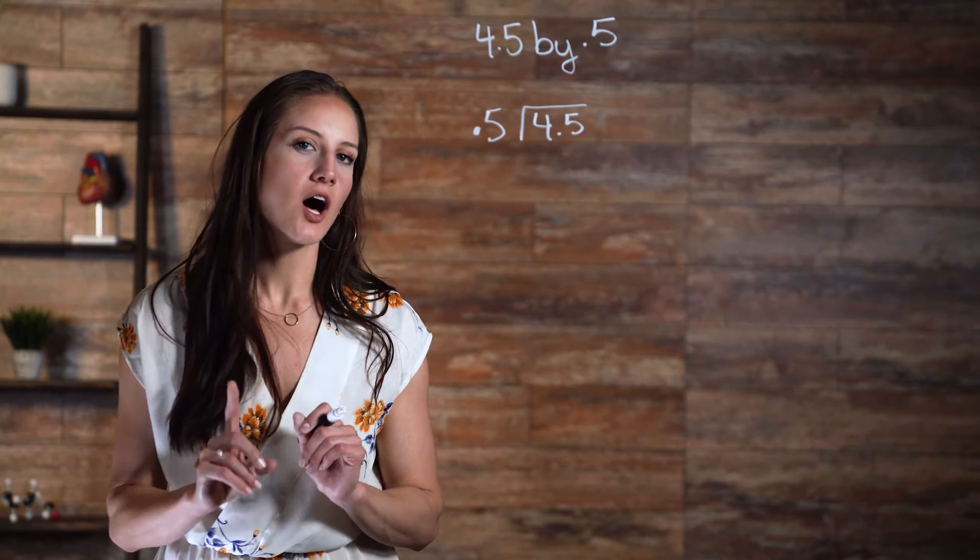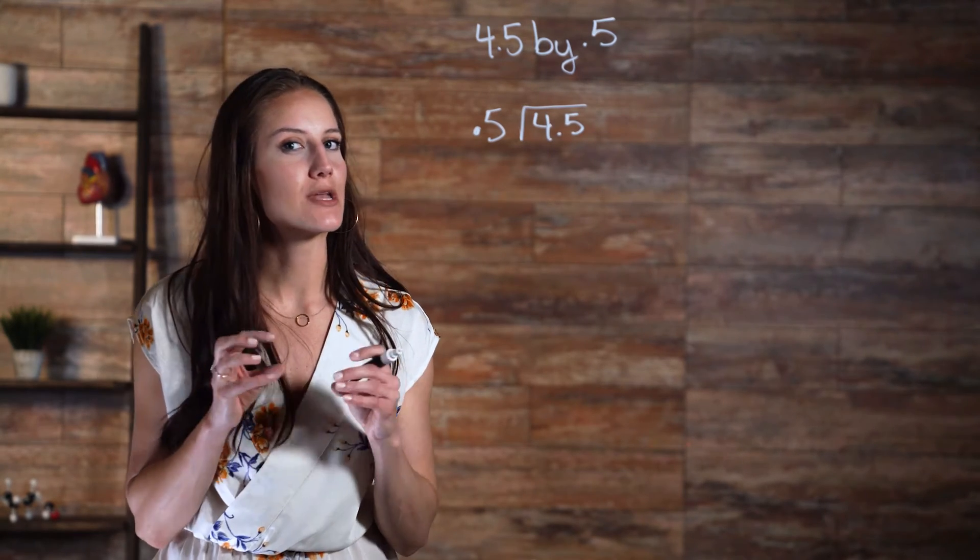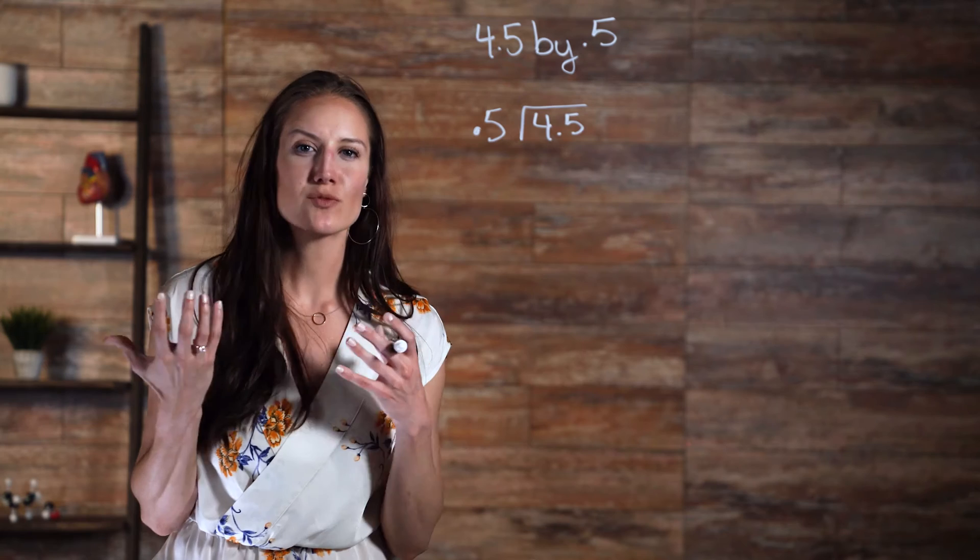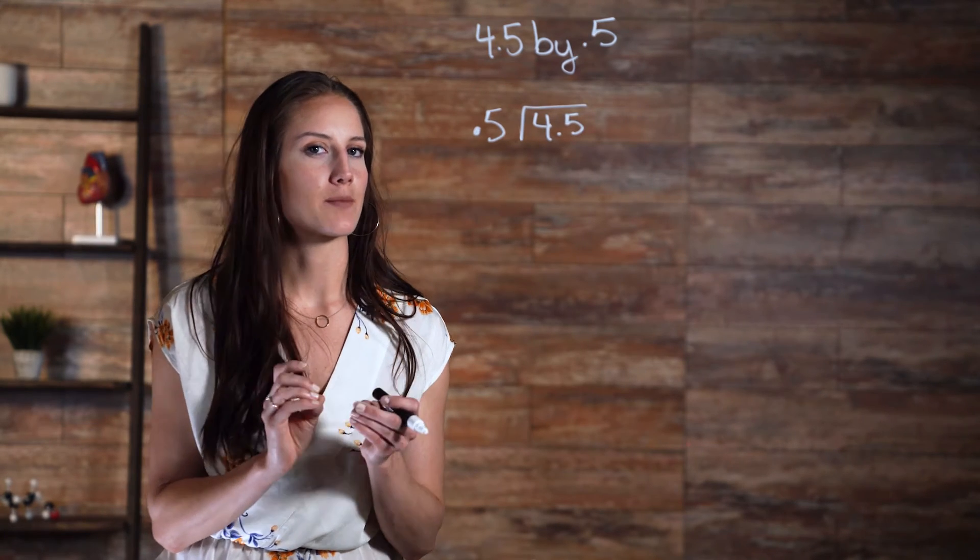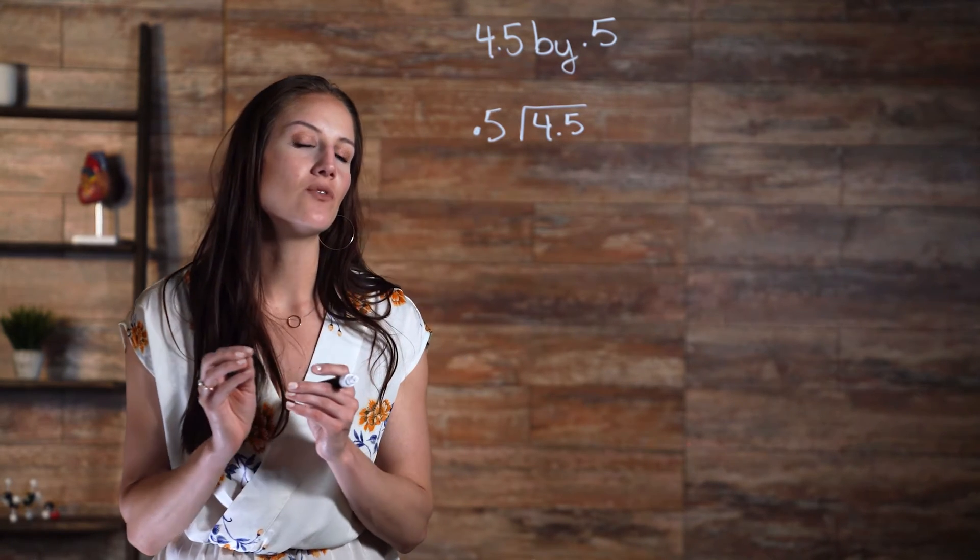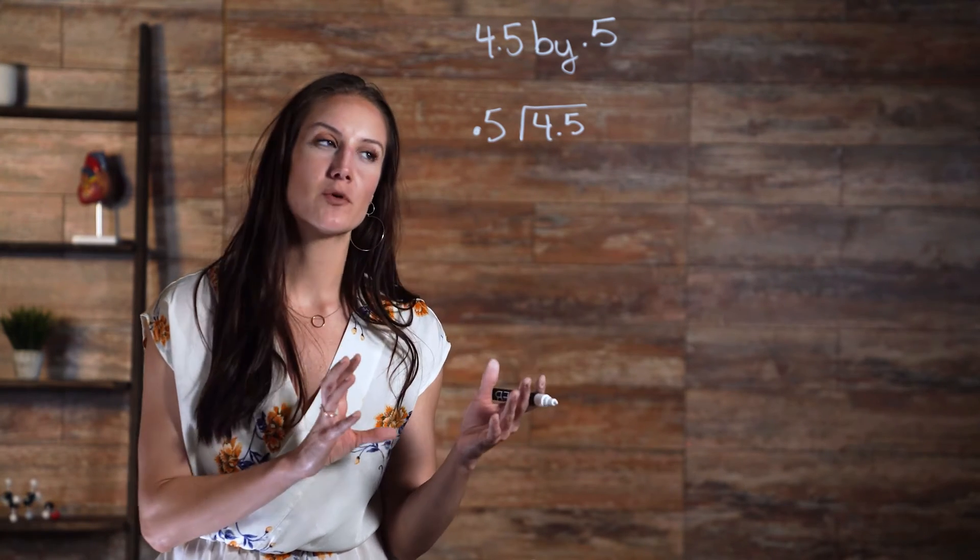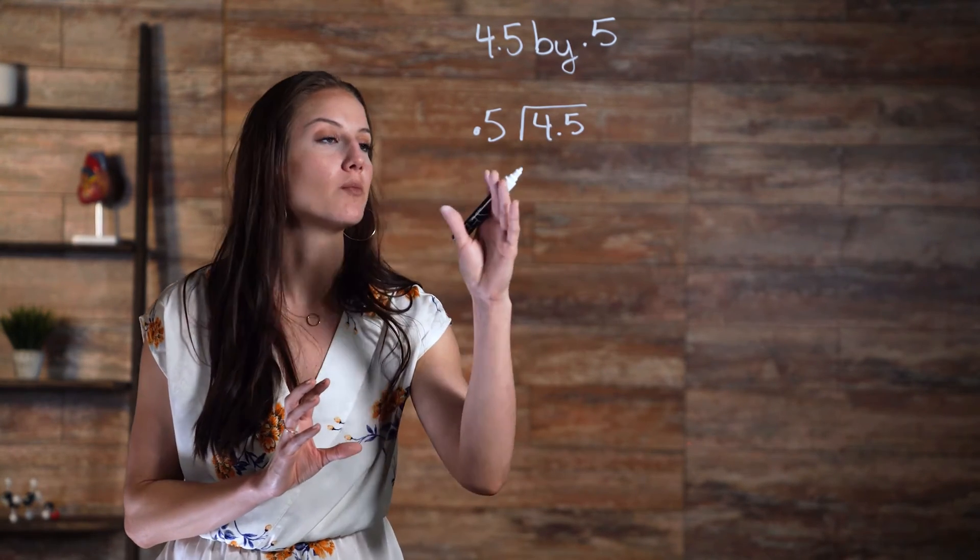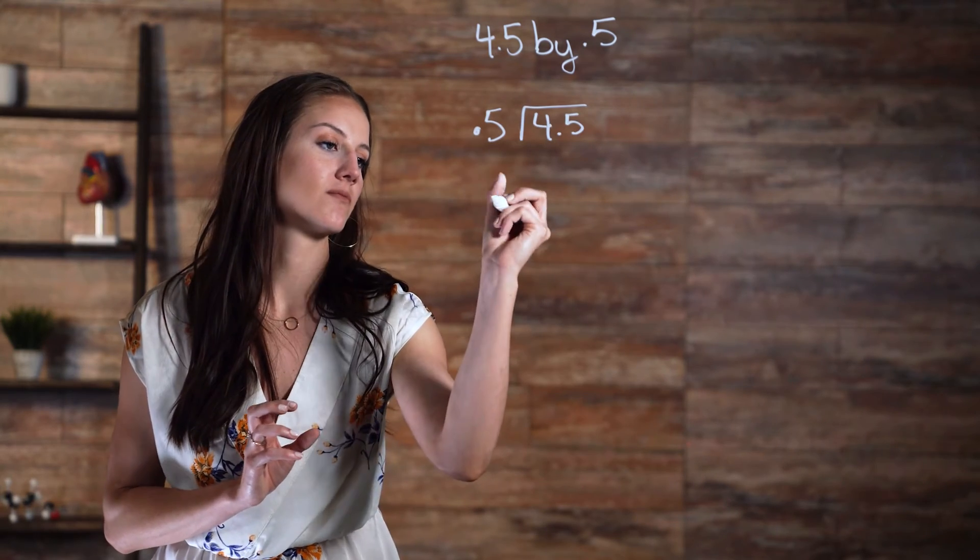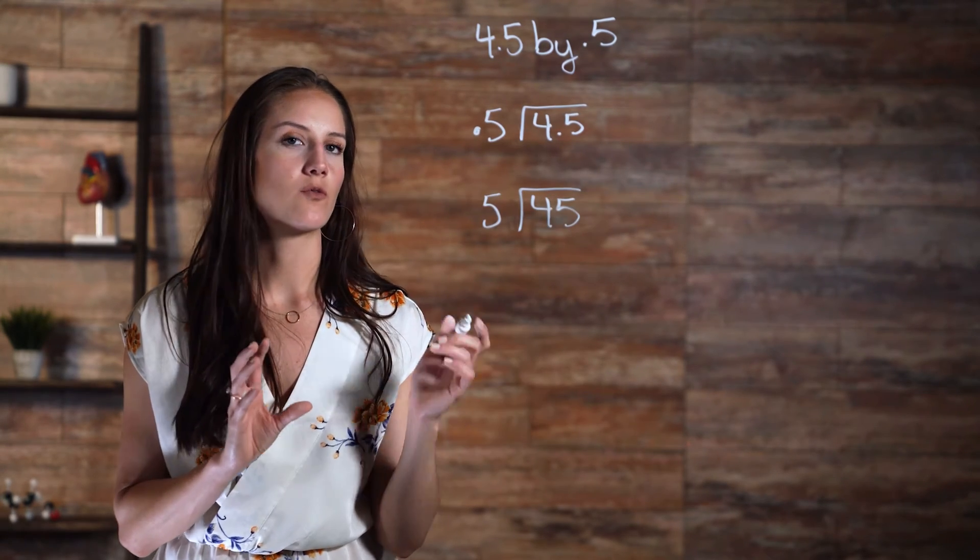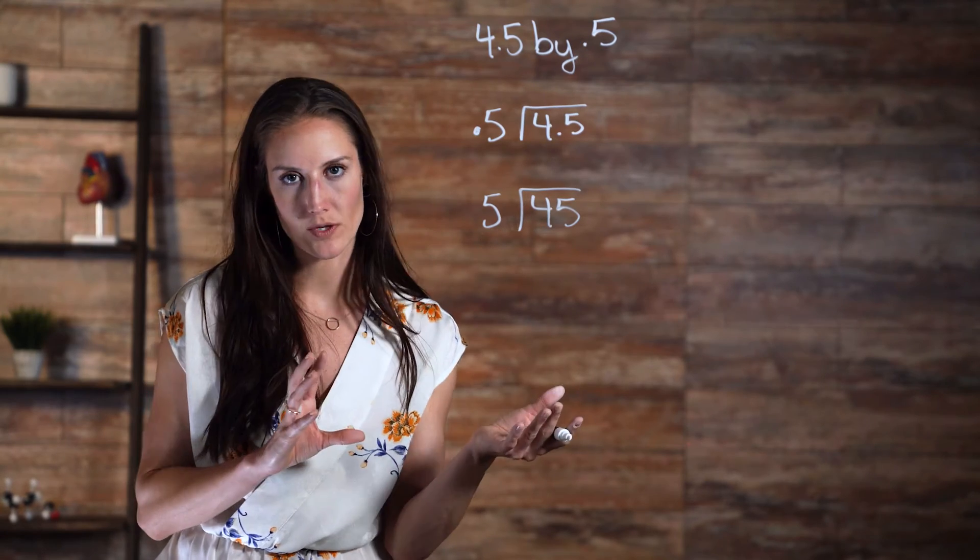The simplest way to accomplish this is by multiplying each number in the expression by 10. As a general rule, every time you multiply a number by 10, you are essentially moving the decimal point over one place to the right. If we multiply 0.5 and 4.5 by 10, we get—now you would solve 45 divided by 5, as you normally would.